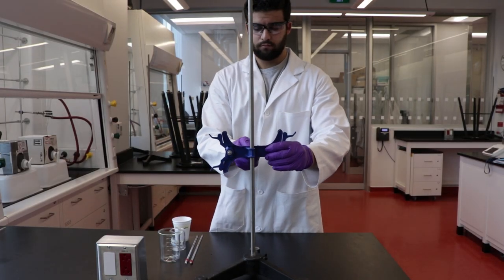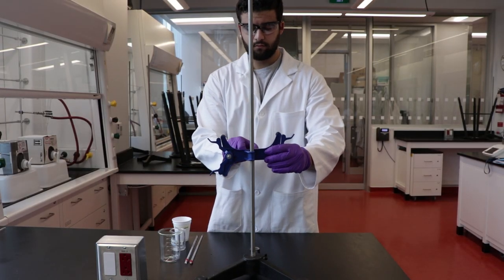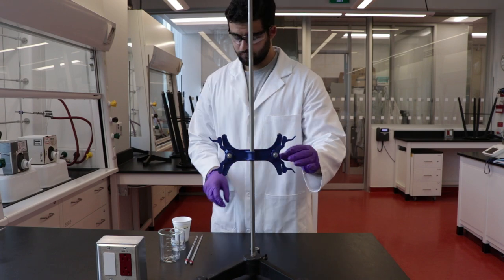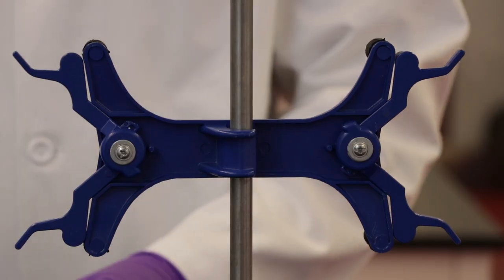Begin setting up the calorimeter by putting the burette clamp on the retort stand. Clip the thermometers into the clamp.